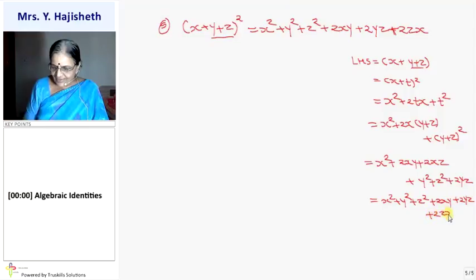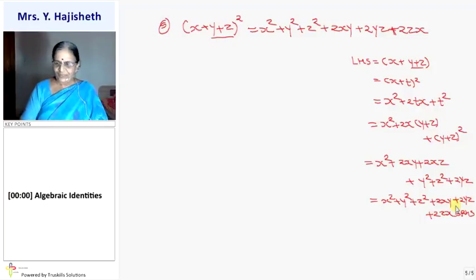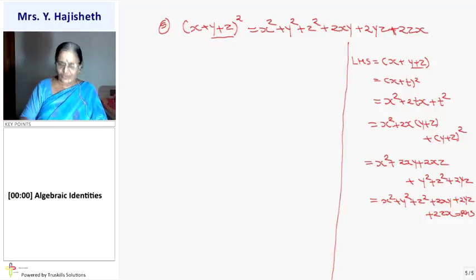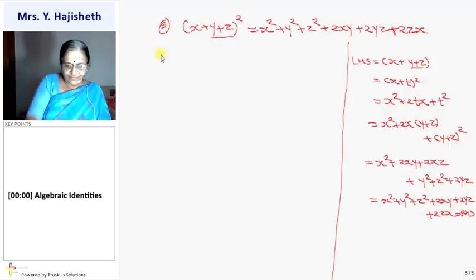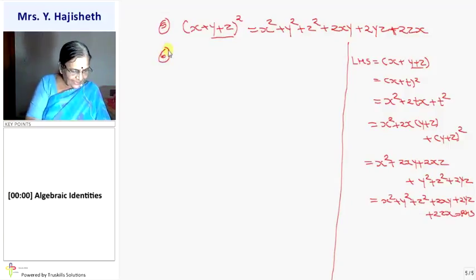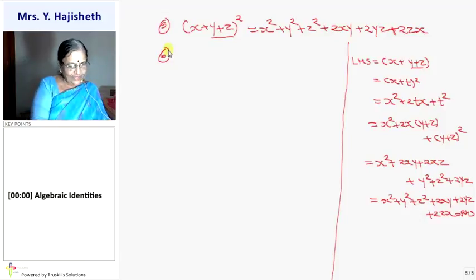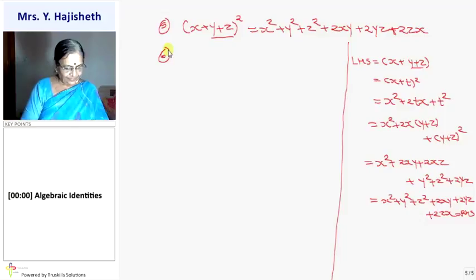And that is the RHS — so this is the derivation of the fifth formula. It may not be in your course. Sixth formula — what is the sixth formula? Tell me.